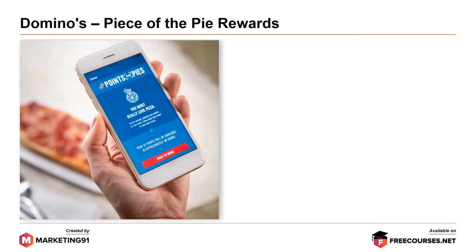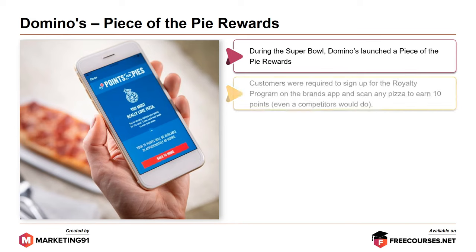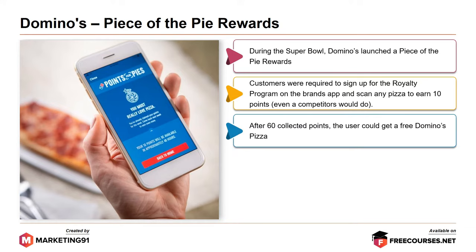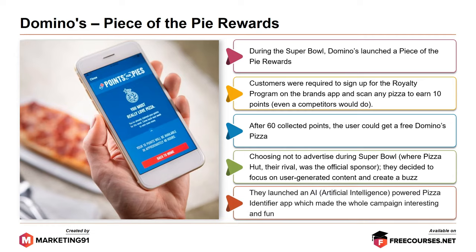Now moving on to examples. First, Domino's Piece of the Pie Rewards. During the Super Bowl, Domino's launched a Piece of the Pie Rewards program. Customers were required to sign up for the loyalty program on the brand's app and scan any pizza to earn 10 points, even a competitor's pizza. After 60 collected points, a user could get a free Domino's Pizza. Choosing not to advertise during Super Bowl — where Pizza Hut, their rival, was the official sponsor — they focused on user-generated content. They launched an AI-powered pizza identifier app, making the campaign interesting and fun.